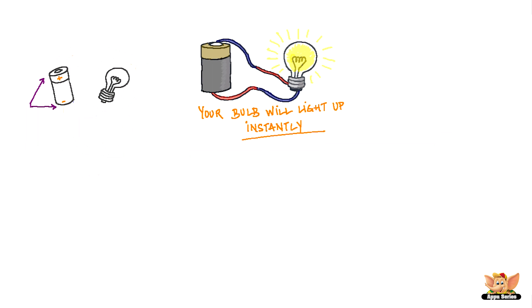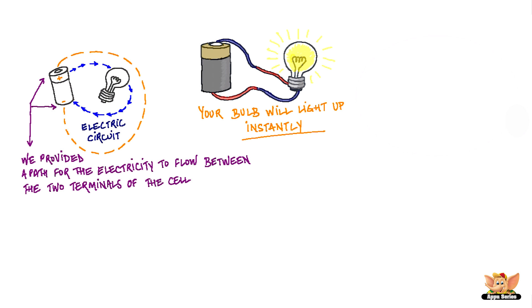That is because by connecting the wires from the bulb to the cell we created an electric circuit. That means that we provided a path for the electricity to flow between the two terminals of the cell. To flow through the two terminals the electric circuit passes through the filament of the bulb.